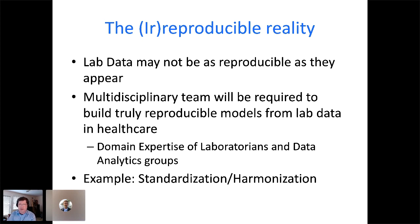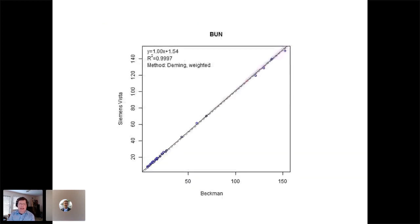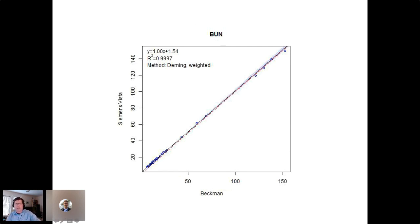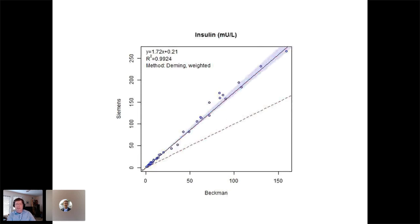Let me give one example using standardization or harmonization. The next few slides are actual data from a crossover study I did several years ago, moving from a Beckman set of instruments to a Siemens set of instruments. The world typically assumes everything works like BUN — blood urea nitrogen — where the slope is one, the intercept is very close to zero, and everything matches up nicely with the unity line. The reality is that for many assays, this is not the case. Here's insulin on those same two instruments — if you look at the dotted unity line, the actual relationship between the instruments has a slope far above that, on the order of 1.7.